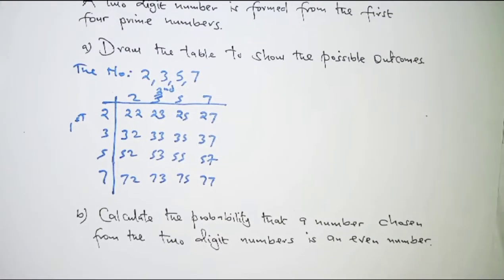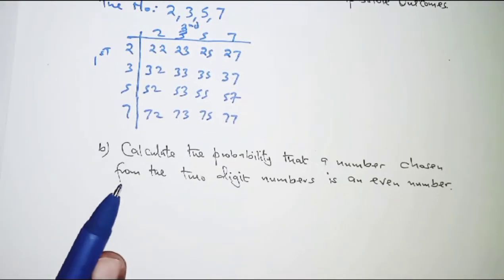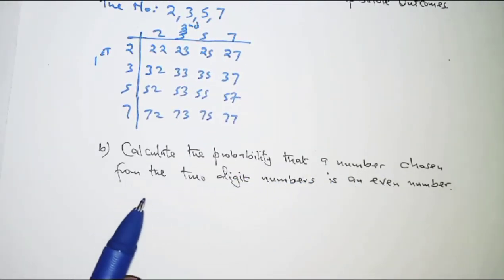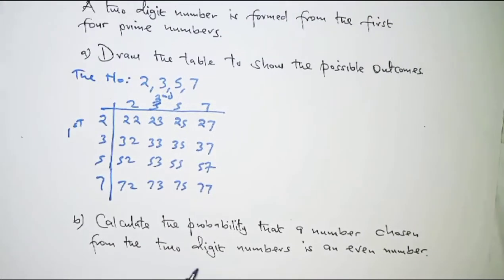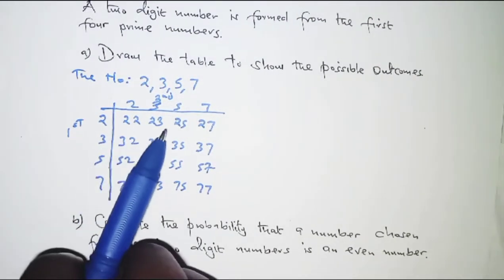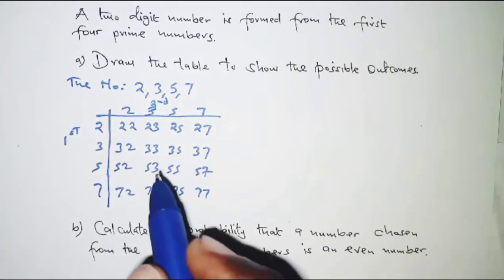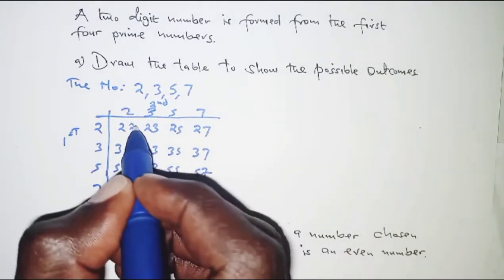So once we are done with part A, part B reads: calculate the probability that a number chosen from the two digit numbers is an even number. So from the two digit numbers formed in this sample space, we have these ones which are even.